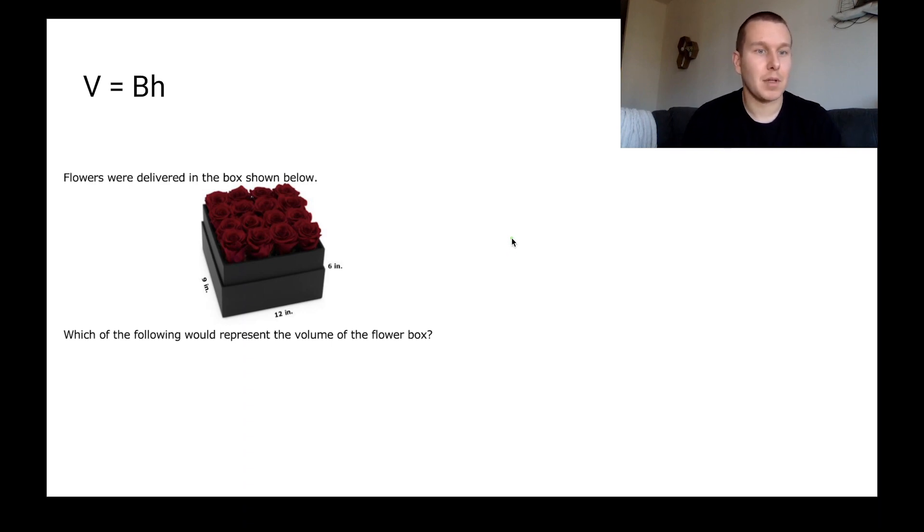It says flowers were delivered in the box shown below. Which of the following would represent the volume of the flower box? So in this one, I see three different numbers that are being used. So I think what I'm going to do is I'm going to use V equals length times width times height. Okay, so I can say V equals question mark because we don't know what it is yet. We'll say the length is 9, the width is 12, and the height is 6. Now, that doesn't really matter which one we choose for those because remember multiplication is commutative. So we can switch those numbers around as needed. And it makes sense because we can flip the rectangular box as needed too.